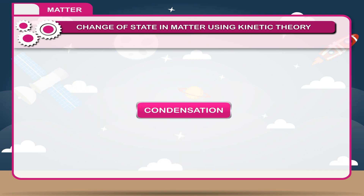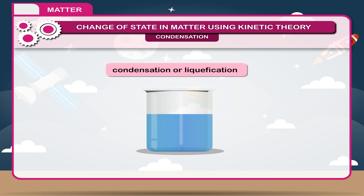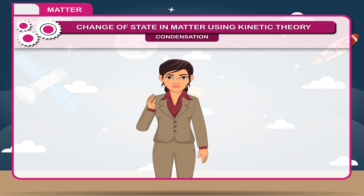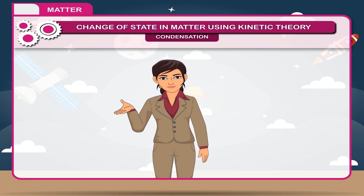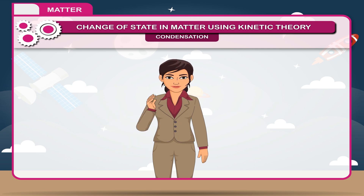Condensation. The change from vapor to liquid phase on cooling at a constant temperature is called condensation or liquification. The temperature at which condensation occurs is called the condensation point of the vapor.